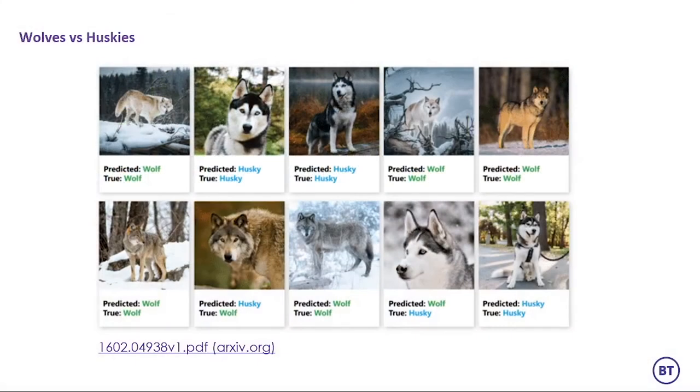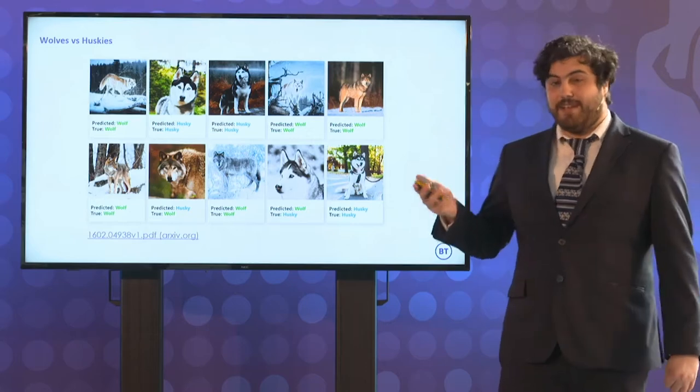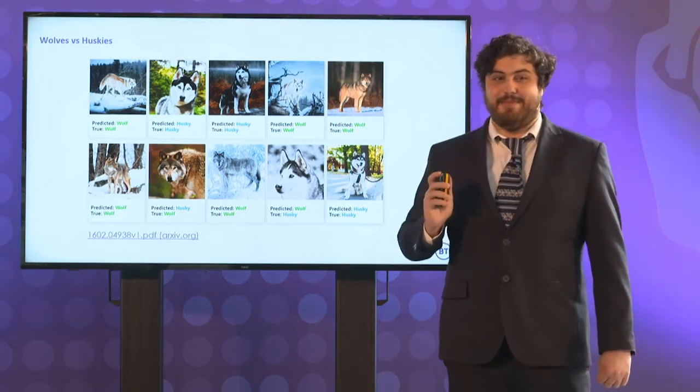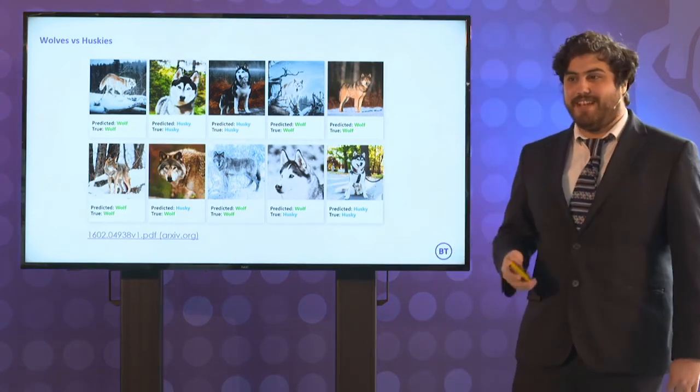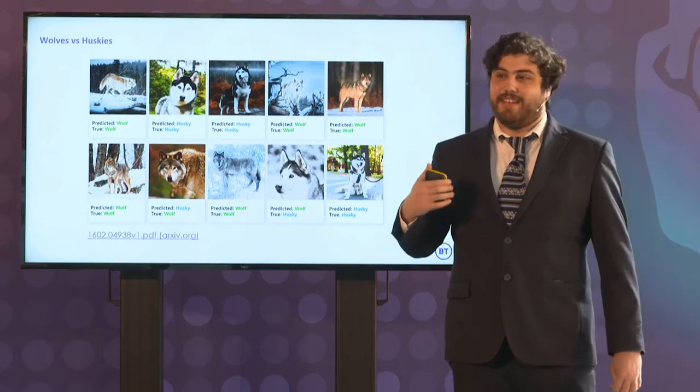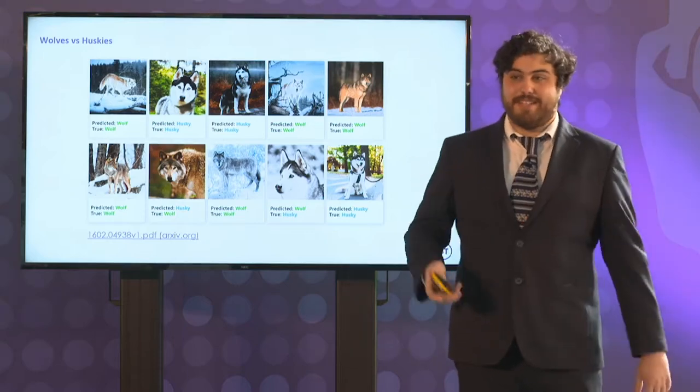So to sort of illuminate the point, we have an example of a classifier that's built to tell between wolves and huskies. You know, they look pretty similar. So humans are probably relatively able to tell them apart. But if you build a machine learning model, it turns out it can be really accurate. You get really good results. But a lot of wolves are found in snow, and a lot of huskies tend to be found not in snow, in people's gardens, for instance. And so it turns out what the classifier is doing under the hood is just learning to detect snow in the image and saying, that's a wolf. And if there's not snow, then it's a husky. It's not actually learning any of your underlying problems at all. And we'll come back to this example later.